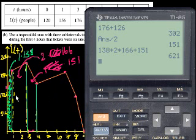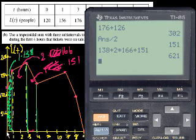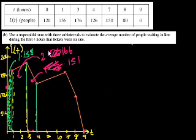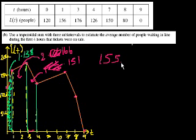That's the total area under those trapezoids. But they ask for the average value of the function, which is just the area divided by the base. The base is 4 — from noon to 4 p.m., or from time equals 0 to time equals 4. So we divide by 4 and get 155.25. The answer to Part B is 155.25 — they don't ask us to round, so a fractional average number of people is reasonable.